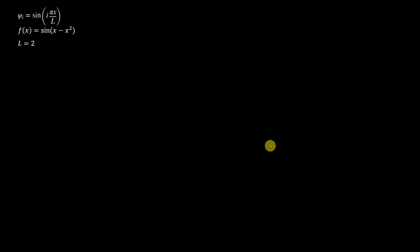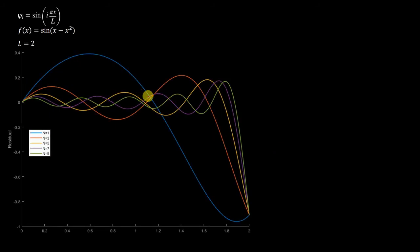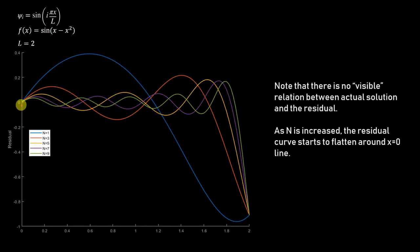As you increase n, the residual starts to flatten around the zero line. However, there is no visible direct relation between the actual solution and the residual, so it's very difficult to get insight just from the residual. We can only say that if the residual is zero throughout the domain, then only is your solution exact.